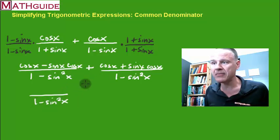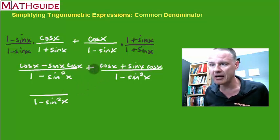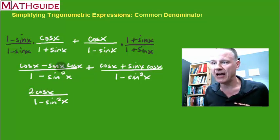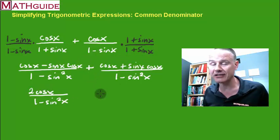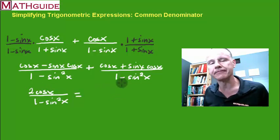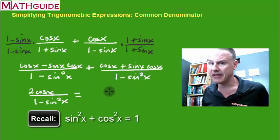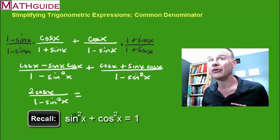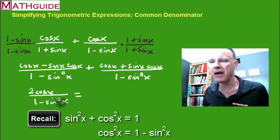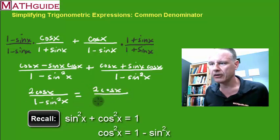Keeping the denominator the same, I add the numerators. Cosine plus cosine gives 2·cosine(x). Then negative sine·cosine(x) plus positive sine·cosine(x) — those are opposite terms, they add to zero. So the numerator simplifies to 2·cosine(x). Now, remember our first Pythagorean identity: sine squared plus cosine squared equals 1. Rearranging, cosine squared equals 1 minus sine squared. So I'm going to replace the denominator with cosine squared.